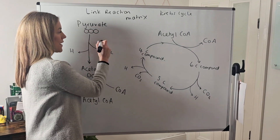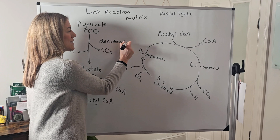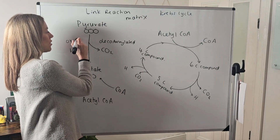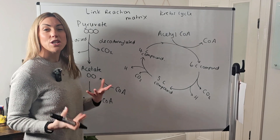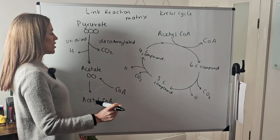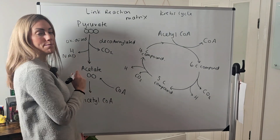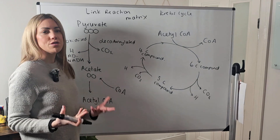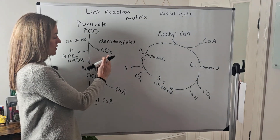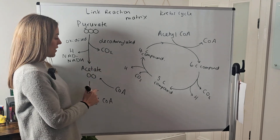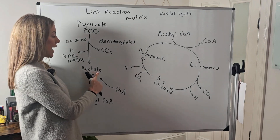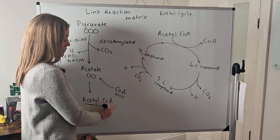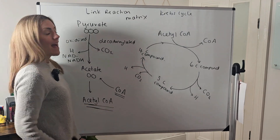So what's going to happen to that pyruvate? First of all it's going to be decarboxylated, which means it's going to lose carbon dioxide. It's also going to be oxidized — or dehydrogenated — because it's going to lose hydrogen. That hydrogen is going to be accepted by the coenzyme NAD to form NADH, or reduced NAD. Because we've decarboxylated it, it's lost a carbon — lost carbon dioxide — so we've now got a two-carbon compound called acetate, and that is going to join with coenzyme A to form acetyl coenzyme A.